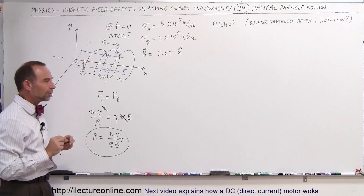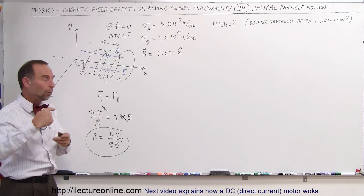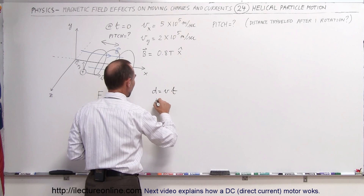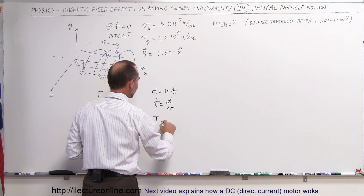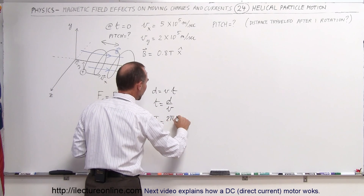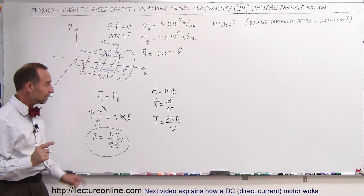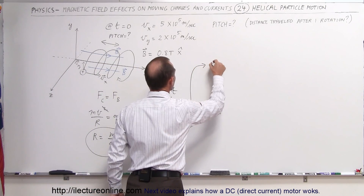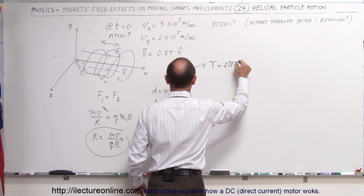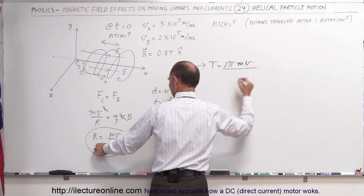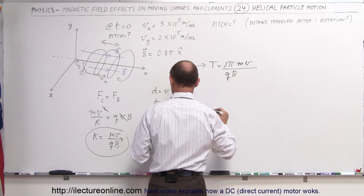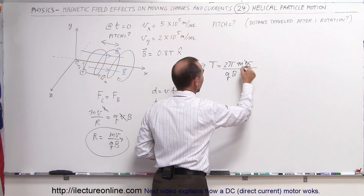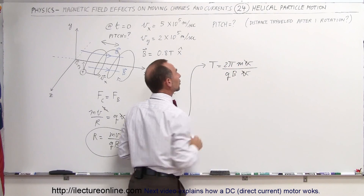Given the radius, we can figure out the period — how long it takes for the proton to move around once. The distance traveled equals velocity times time, so the time equals distance divided by velocity, and the period equals 2πr / v. Substituting r = mv/(qB), the period becomes 2π × (mv/qB) / v, and the velocity cancels out. So the period is simply T = 2πm / (qB).